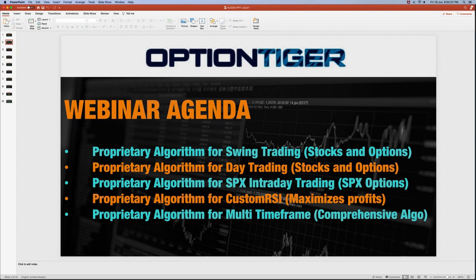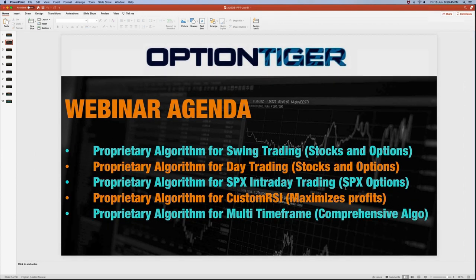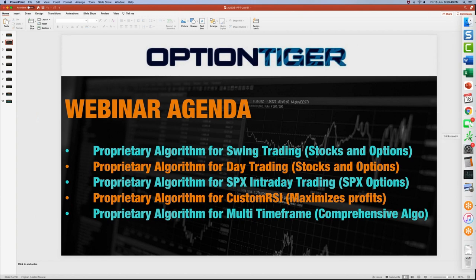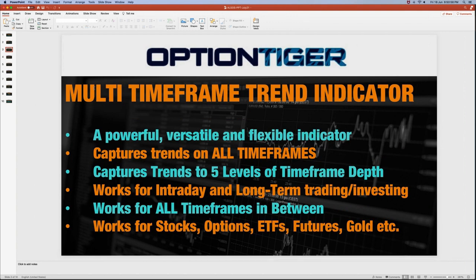The most comprehensive algo is the multi-time frame trend indicator — it's a really cool indicator and you're going to see a demo. It is the most powerful, versatile, and flexible indicator, capturing trend on all time frames. You can use it for day trading, swing trading, or long-term investing. The coolest thing is it captures trends up to five levels of time frames within the same chart, and it works for any trader — stock, options, or futures.